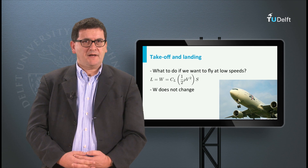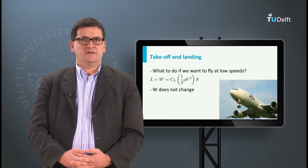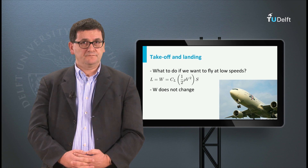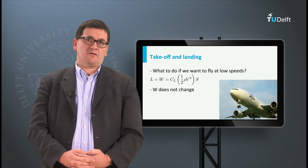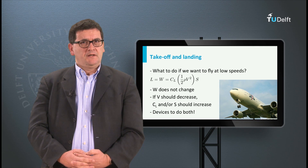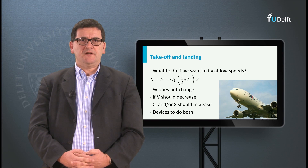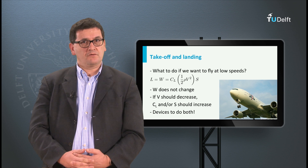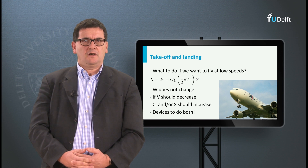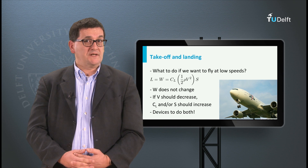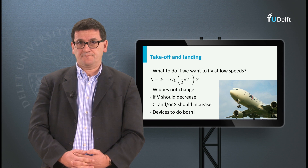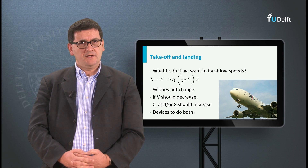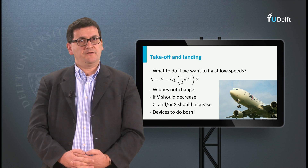At landing and take-off we fly at low airspeeds. As you can see in the formula, this has a large impact on the lift force. The question is what to do, because the weight of the aircraft does not change. In order to compensate for a lower value of the airspeed, the other parameters should increase. The air density is beyond our control, although most airfields are at low altitudes and therefore the density has rather high values, which helps. The other two parameters — the lift coefficient and the wing surface area — can be changed by using all kinds of high lift devices.